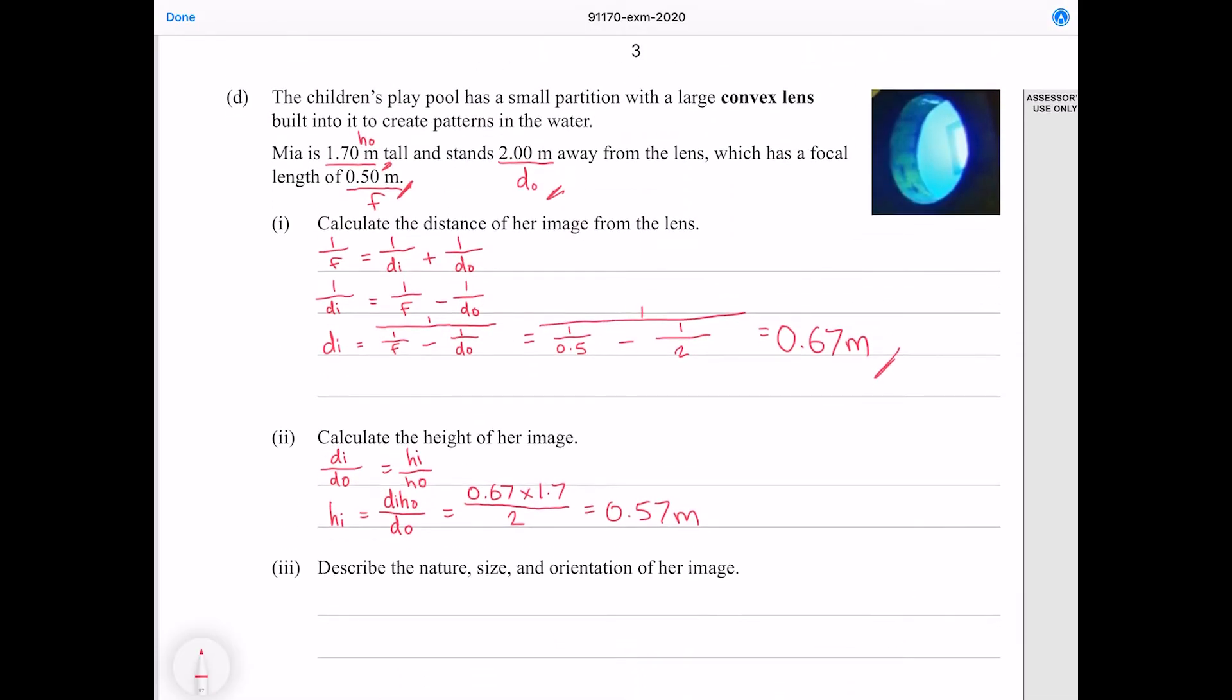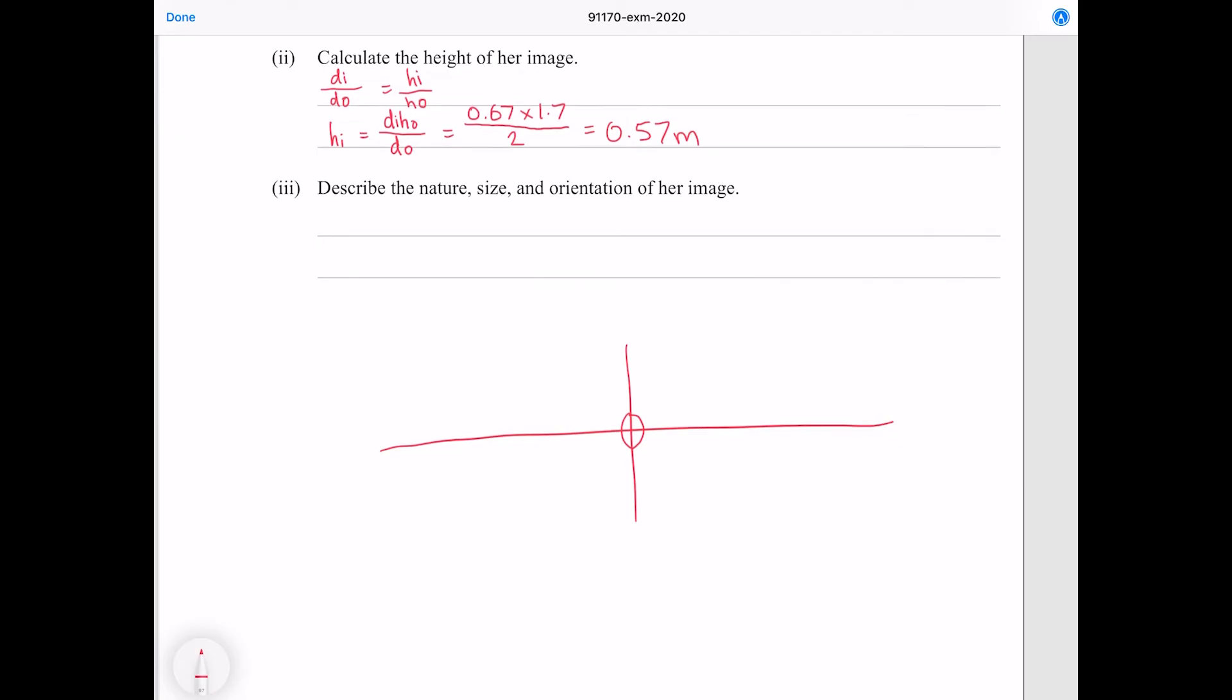Now if our focal length is 0.5 meters, she's standing two meters away, so she's standing four times that distance. So I'm going to put my focal length here and let's say that Mia is roughly here. Doing our first ray through the middle, our second ray parallel to the axis and then through the focal point or near to it, we see that our image is going to be diminished, which reflects what we found here.